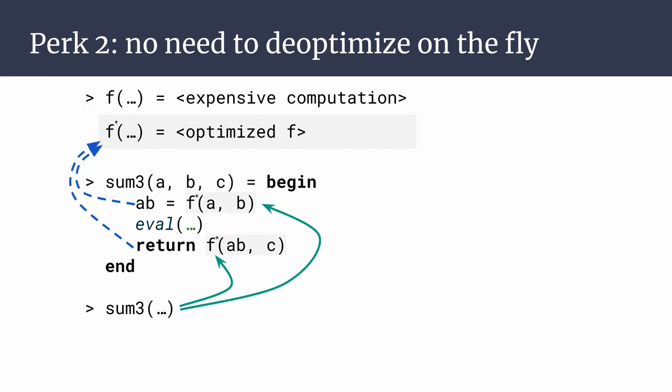Note that Julia will never need to deoptimize the second call to f on the fly, which would be the case with the traditional semantics of eval.